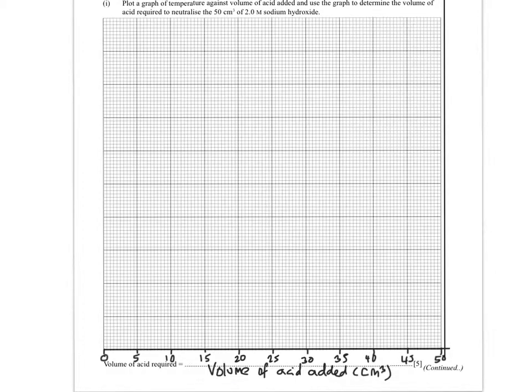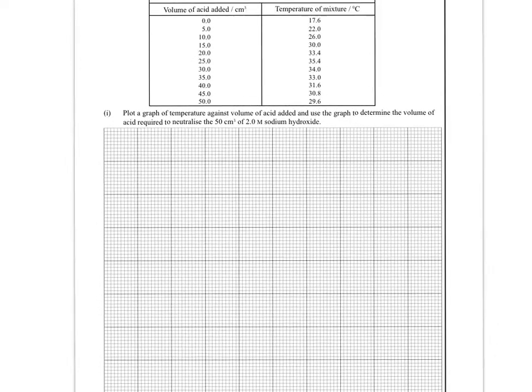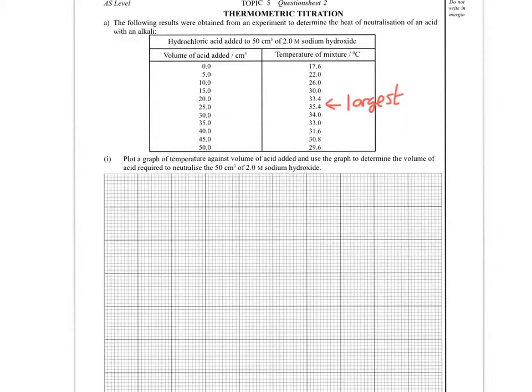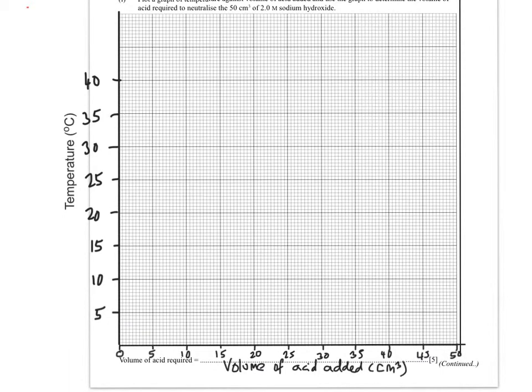The first thing I do is I scale up my x-axis. Now I need to scale my y-axis. To do that, I need to look at my data for y and take a note of what my largest value is. My largest value is 35.4, so my scale has to include that. My smallest value is 17.6, so it has to include that as well.